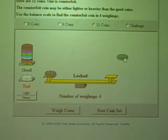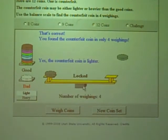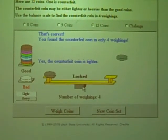That's correct. You found a counterfeit in only 4 weighings. Is it heavier or lighter? It is lighter. Yes, the counterfeit coin is lighter. So as you can see, we can use mathematical reasoning to figure out these problems. Thanks, and I'll see you next time.